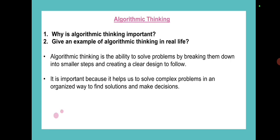Next topic is Algorithmic Thinking. Why is algorithmic thinking important? Give an example of algorithmic thinking in real life. Algorithmic thinking is the ability to solve problems by breaking them down into smaller steps and creating a clear design to follow. It is important because it helps us to solve complex problems in an organized way to find solutions and make decisions.